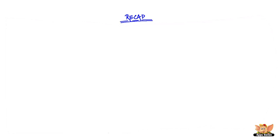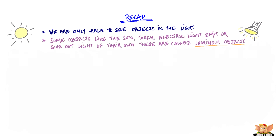Now let's have a quick recap of all that we've talked about in our videos about light, shadows and reflections. We are only able to see objects in the light. Some objects like the sun, torch, electric light, etc. emit or give out light of their own. These are called luminous objects.